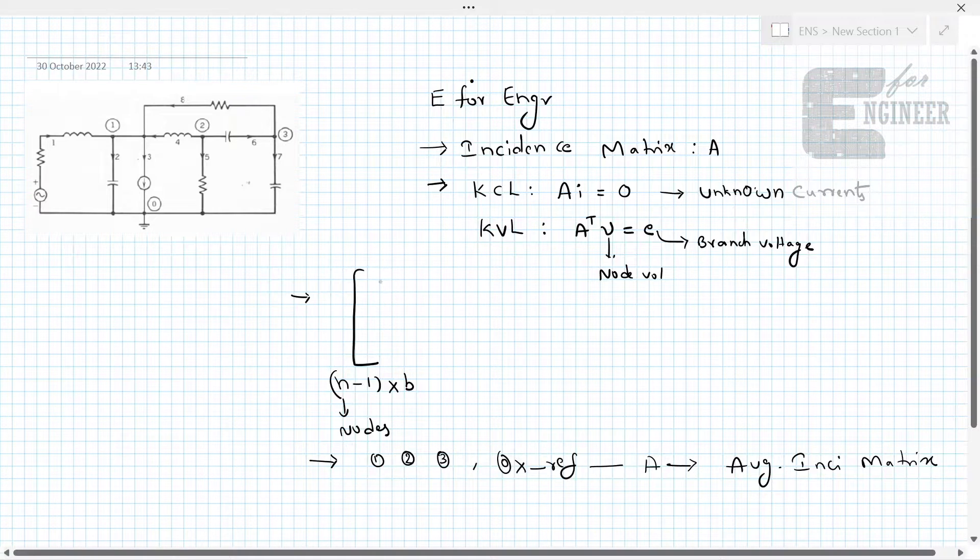Let us write this incident matrix. We have n minus 1 nodes by B. This is the size of this incident matrix. What are the branches in this circuit? We have 8 branches. This is branch 1, this is 2, this is 3 and so on 4, 5, 6, 7 and finally we have 8.